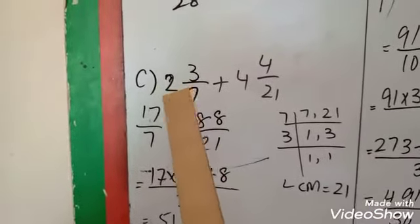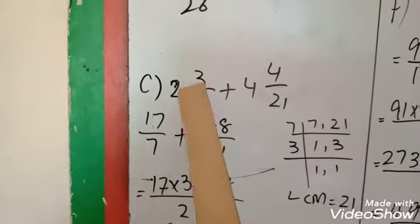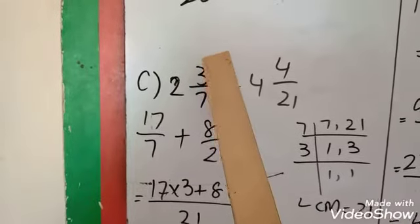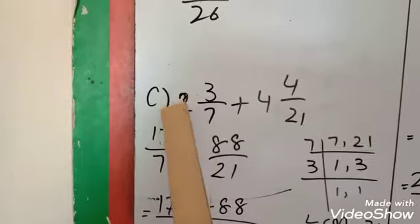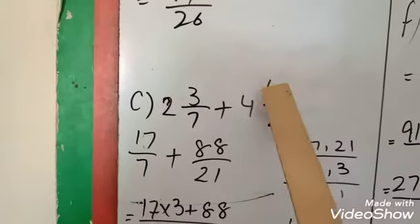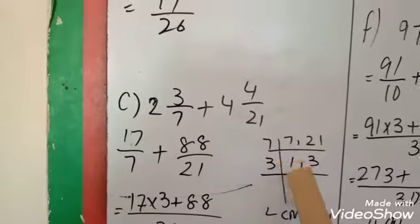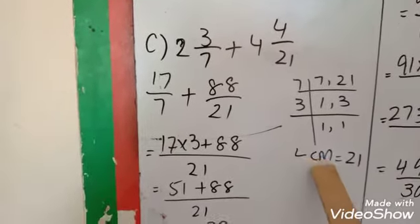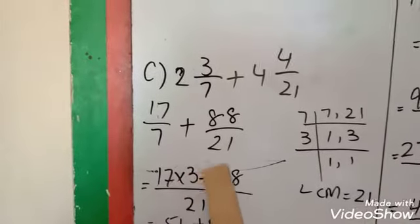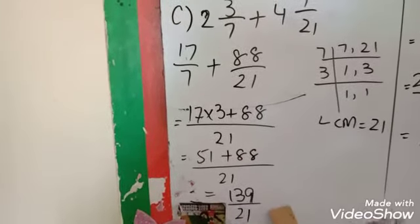C part: these are mixed form fractions, so we change them into improper fractions. We multiply the two values: 7 times 2 is 14, and add the numerator value. So 14 plus 3 equals 17/7. Plus 21 times 4 plus 4 equals 88/21. Now we take LCM of 7 and 21, which is 21. First value 7 times 3 is 21, so we multiply 17 by 3 to get 51. Plus 88 stays as it is. 51 plus 88 equals 139/21. This is your answer.